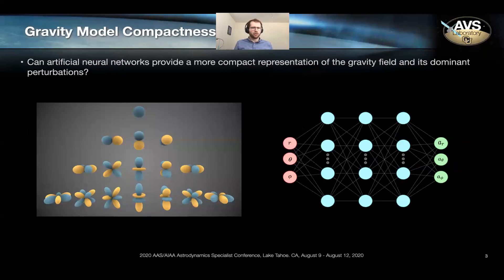So explicitly, can artificial neural networks provide a more compact representation of the gravity field and its dominant perturbations. That's the question that I wanted to answer that I felt like was missing from some of these papers.